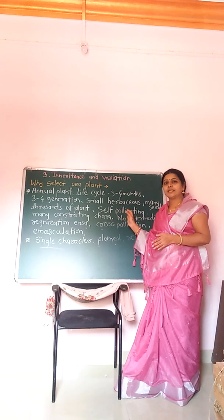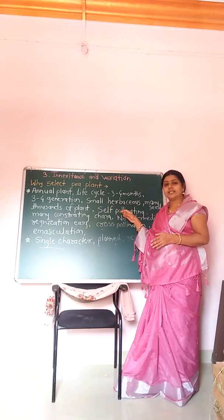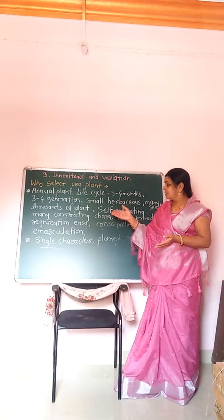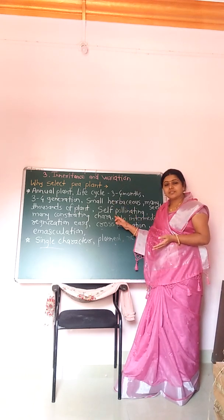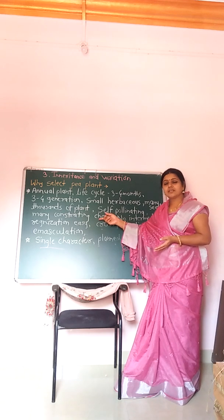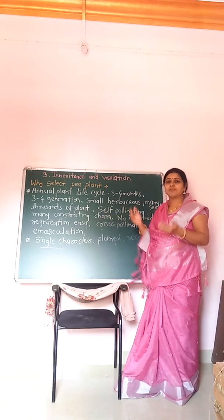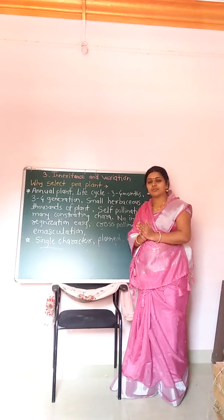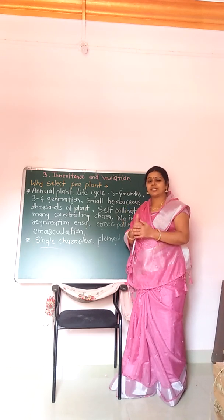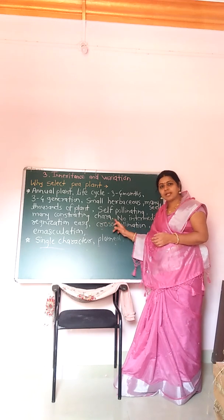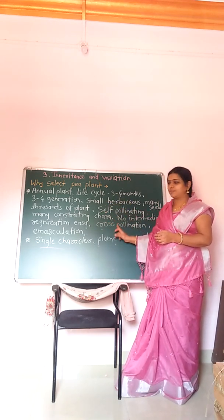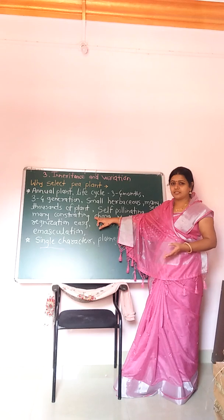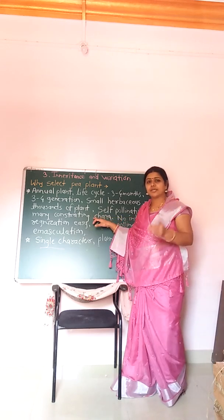Another reason is that the garden pea plant is a self-pollinating plant. Self-pollination means the plant pollinates itself.